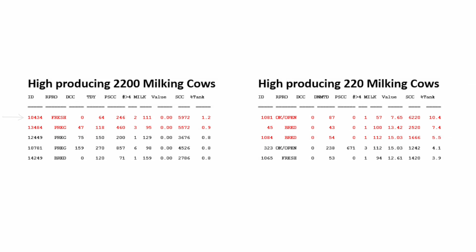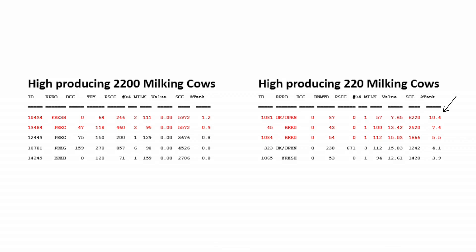In the very large herd, the somatic cell count of the highest contributing cow is almost six million cells per ml, but that cow is contributing only about one percent of the total bulk tank. In contrast, in the smaller herd, the individual cow somatic cell count is also just above six million cells per ml, but she's contributing over 10 percent of all the somatic cells in the herd. Clearly, reducing bulk tank somatic cell count in the smaller herd requires decisions on what to do with that individual cow, whereas in the bigger herd we'd be looking more broadly at other factors.